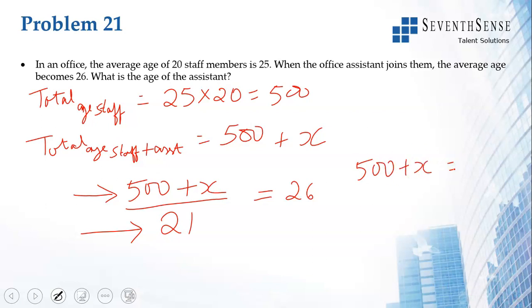26 times 21 is 546, so x equals 46. The office assistant who joins them is 46 years old. You see that person who joins should be more than 25 because the overall average is increasing to 26.